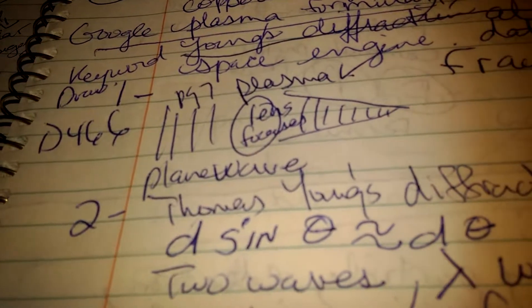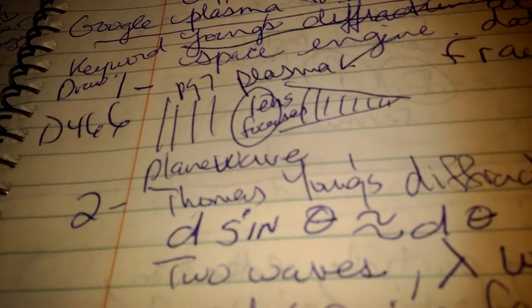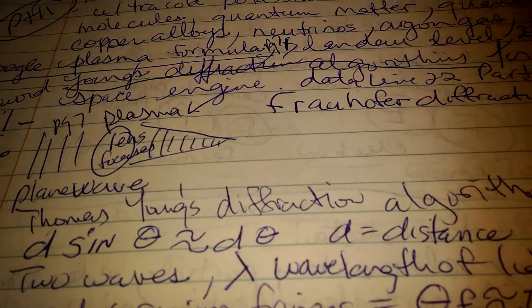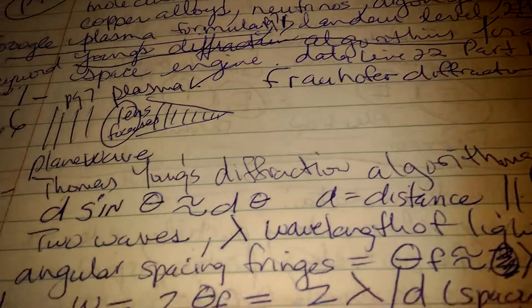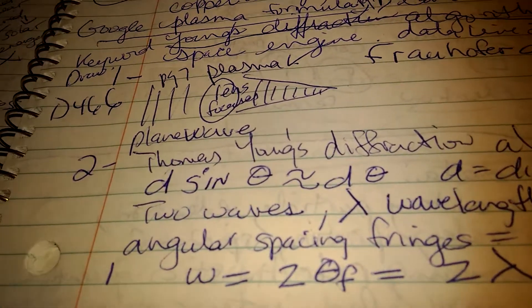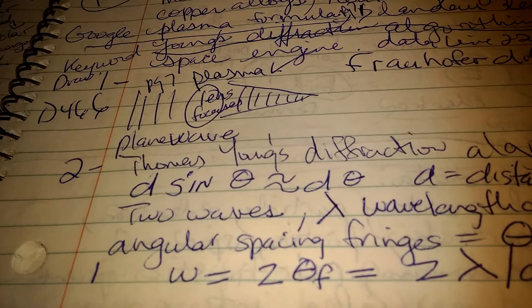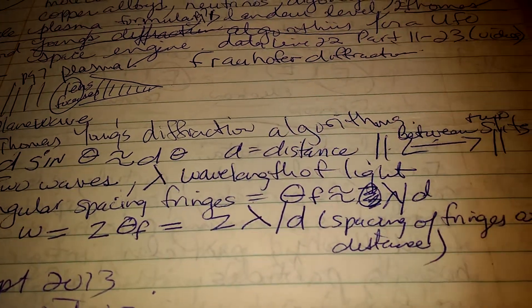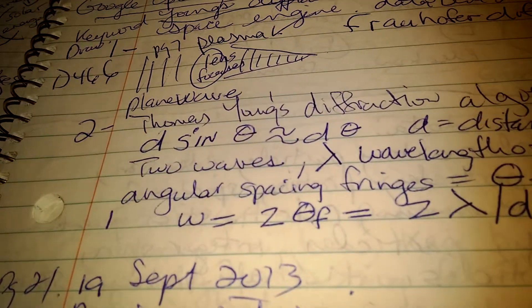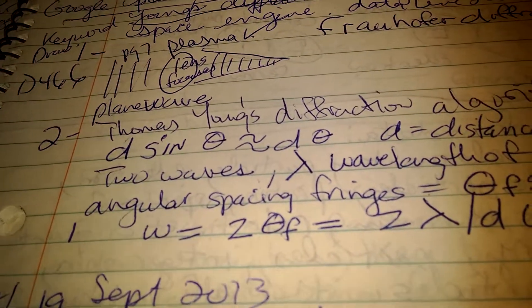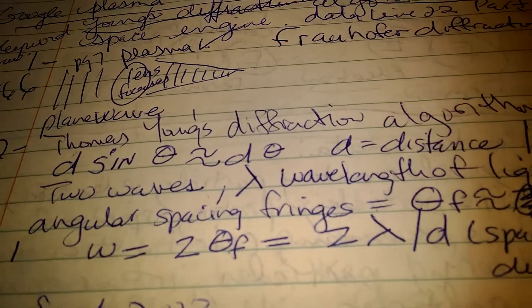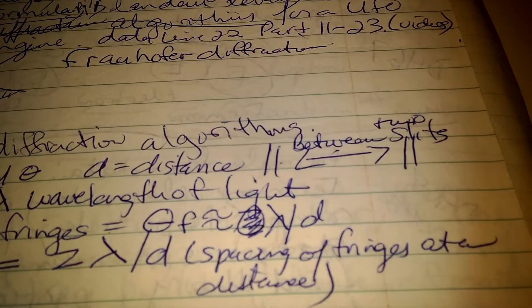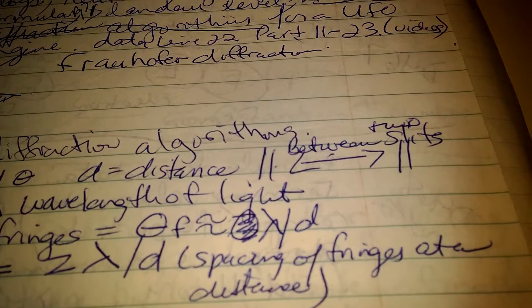This shows a plasma lens focusing — this is Fraunhofer diffraction, and this is Thomas Young's plane wave and Thomas Young's diffraction. There's a diagram and circle with those little symbols: d equals distance between the two slits, two waves, wavelength of light.